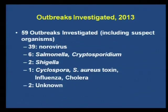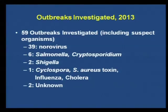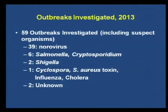Just a brief overview of the outbreaks we investigated in 2013. By far, norovirus is our most common outbreak. The thing about norovirus is that individual cases are not actually reportable, but all outbreaks are reportable. A lot of clinical labs don't test for norovirus, so we have to get that done at the State Hygienic Lab. We also had six outbreaks each of salmonella and cryptosporidium — we had a lot of crypto in pools last summer, and chlorine doesn't kill crypto as fast as we'd like.